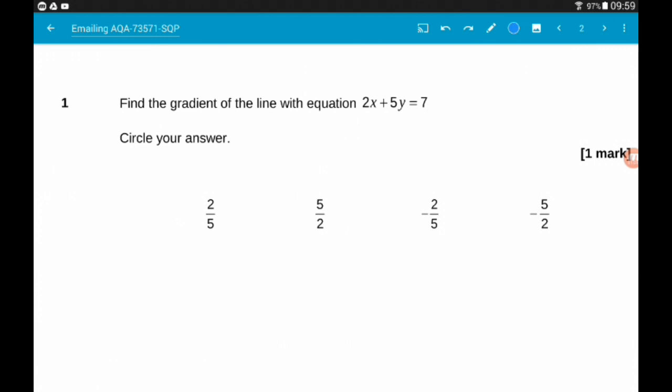So question one wants us to find the gradient of the line with equation 2x + 5y is equal to 7.